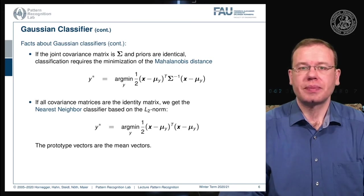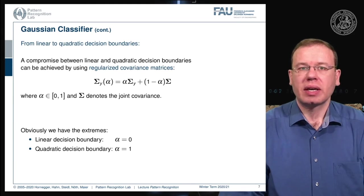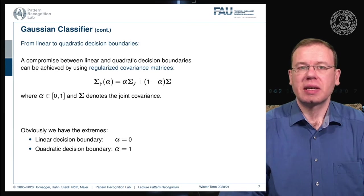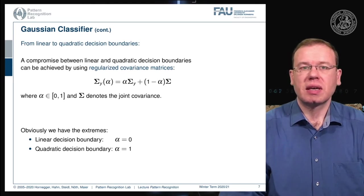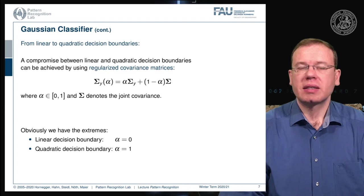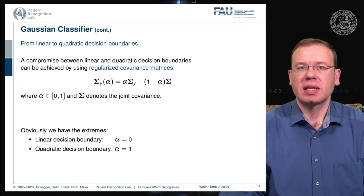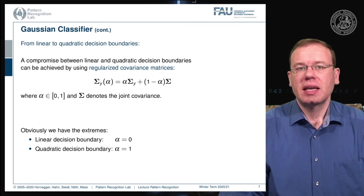There are also ways to incorporate additional information in the covariance matrices by mixing the modeling approach. We can switch between linear and quadratic decision boundaries using a mixing factor alpha between zero and one, blending the total covariance sigma and the class-wise covariance sigma_y. If alpha equals zero we get global modeling with a linear boundary; if alpha equals one we get a quadratic decision boundary.